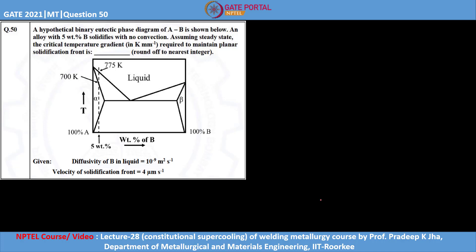This is question number 50 of GATE 2021 Metallurgical Engineering, which carries two marks. A hypothetical binary eutectic phase diagram of A-B is shown. An alloy with 5 weight percent B solidifies with no convection. Assuming steady state, the critical temperature gradient in kelvin per mm required to maintain a planar solidification front is to be determined. The data given: diffusivity of B in liquid is equal to 10 to the power minus 9 meter square per second.